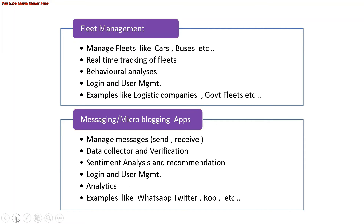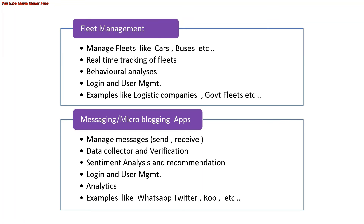For fleet management, like with Ola or Uber, you can create different services to manage each fleet — where they are, where they're traveling, how they're traveling, and real-time tracking. For messaging and micro-blogging apps like Twitter, Instagram, or WhatsApp, you divide responsibilities into separate microservices. The key is always how you logically divide your microservices so that each performs one task with single responsibility.